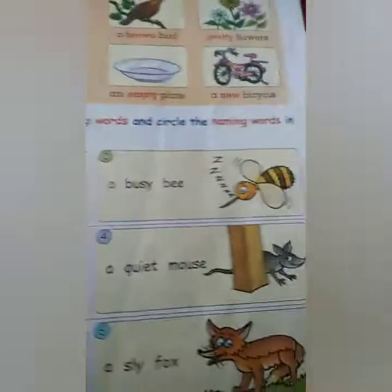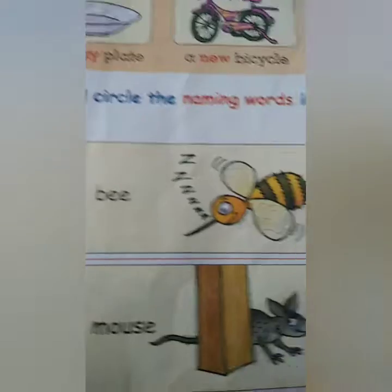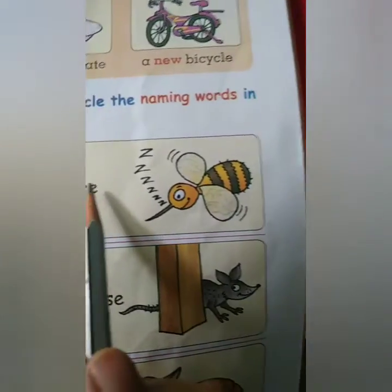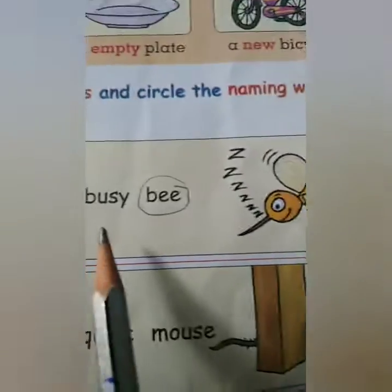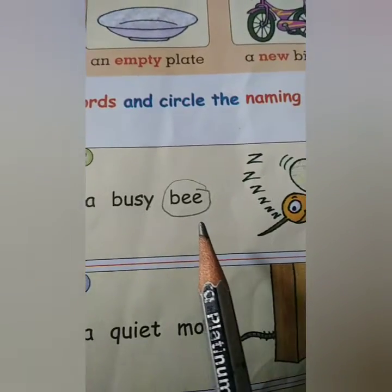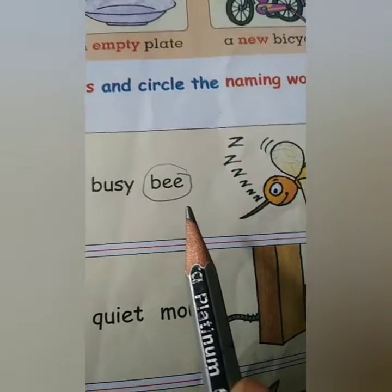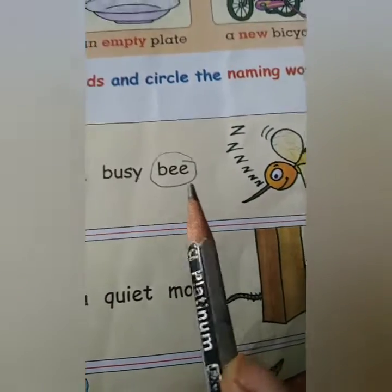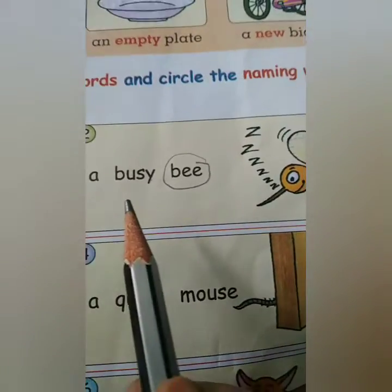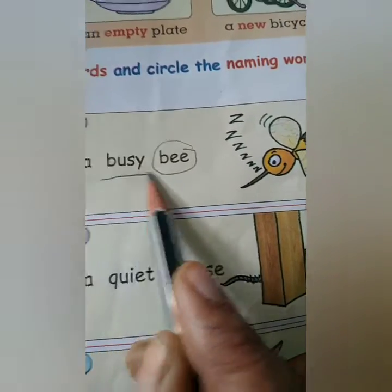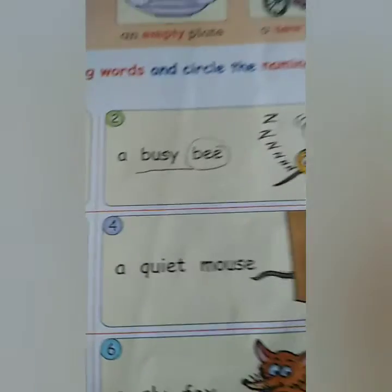Now: a busy bee. We are talking about bee, so the naming word is bee. The word 'busy' gives us more information about bee — it describes bee. So the word that is describing bee is 'busy'. We have to underline 'busy'.